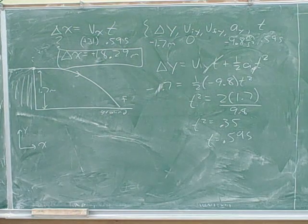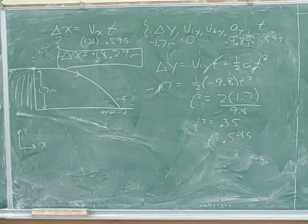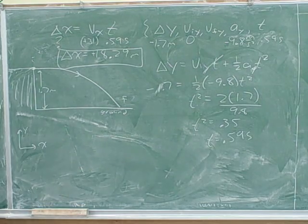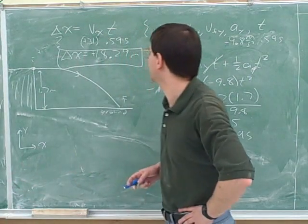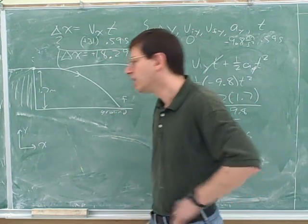So what's the answer to the question? 18. Positive 18.29. Right. Since they just asked how far, they're not really asking for vectors. You'd probably get full credit if you just said 18.29 meters, but the displacement is in our positive direction. All right.